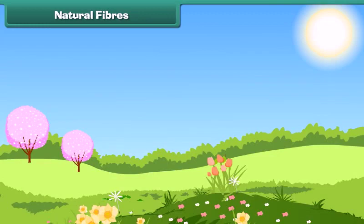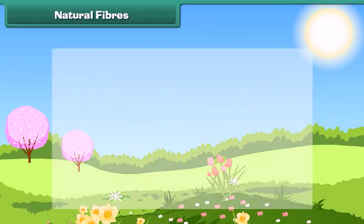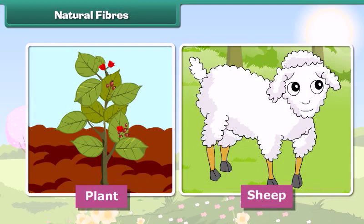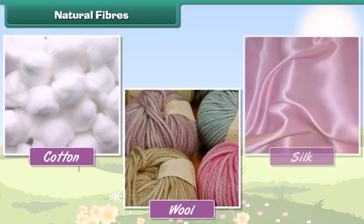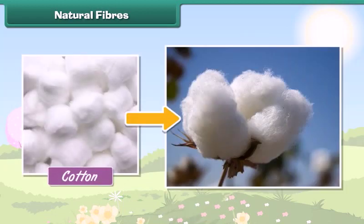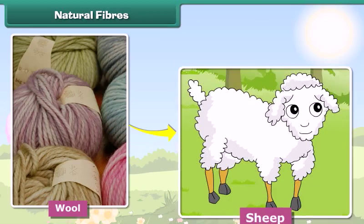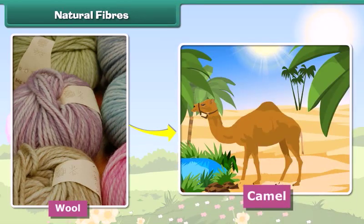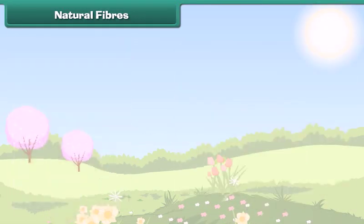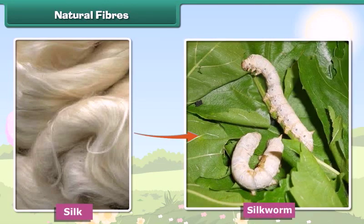Natural fibers are made from plants and animals. Some examples of natural fibers are cotton, wool, and silk. Cotton is obtained from plants, wool is obtained from sheep, goats, and camels, and silk is obtained from silkworms.